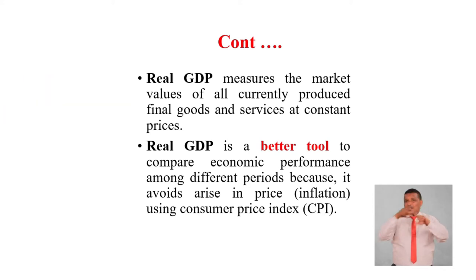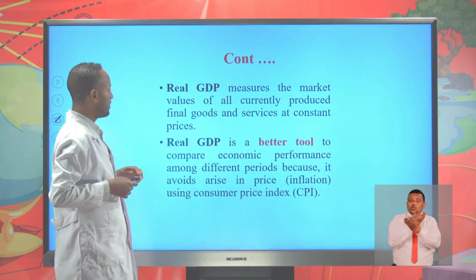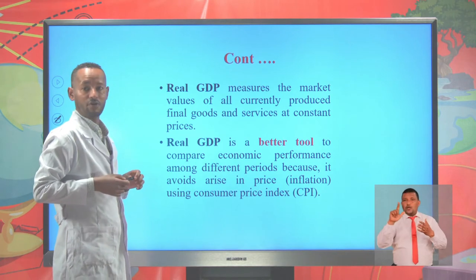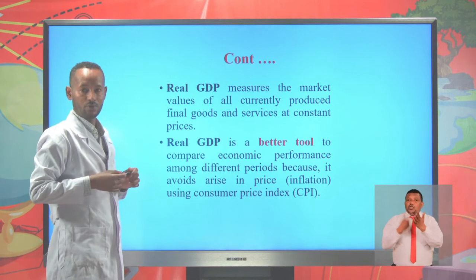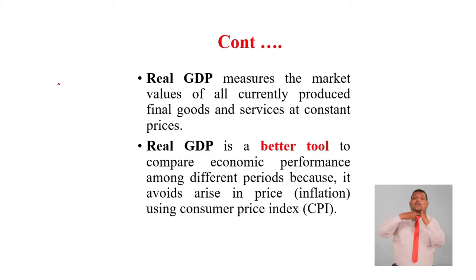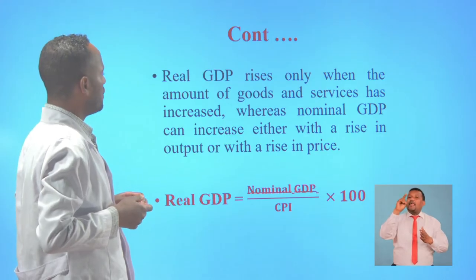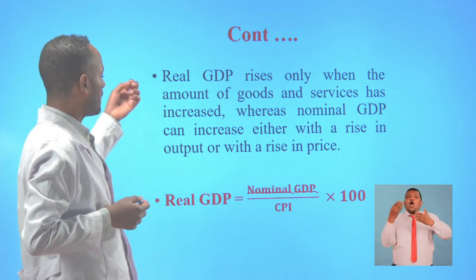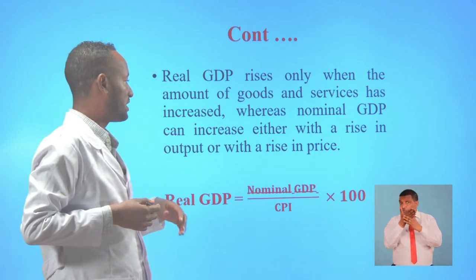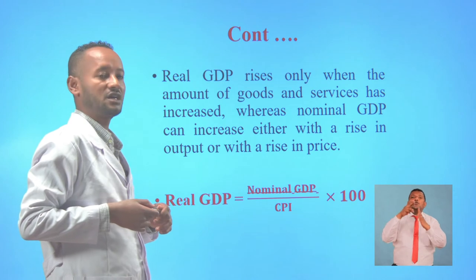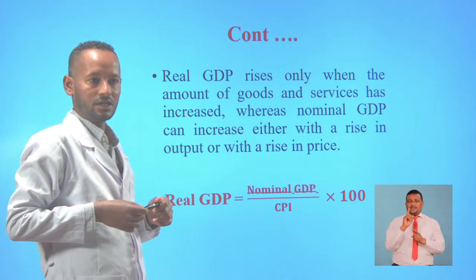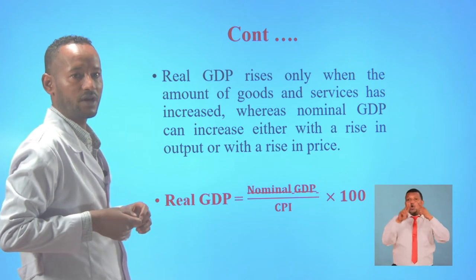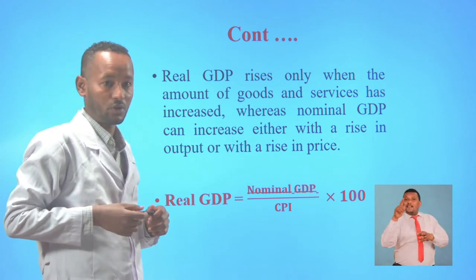Real GDP measures the market value of all currently produced final goods and services at constant prices. This is a better tool used to measure economic performance among different periods because it avoids the problems of inflation or rise in price using the consumer price index. Real GDP rises only when the amount of goods and services or outputs increases, whereas nominal GDP can increase simply with either a rise in output or a rise in price. That means we are not certain whether there is economic growth using the nominal approach, but real GDP avoids this problem using the consumer price index.